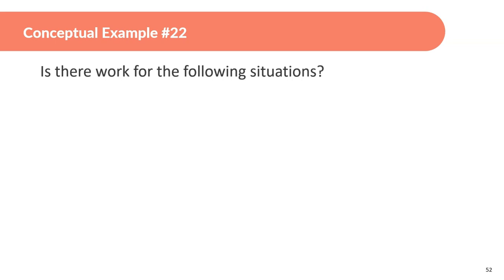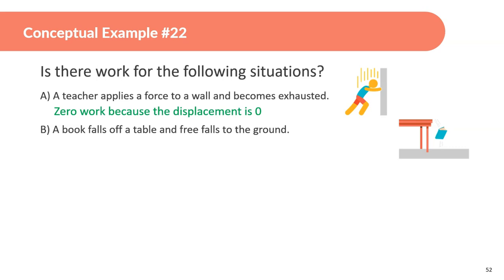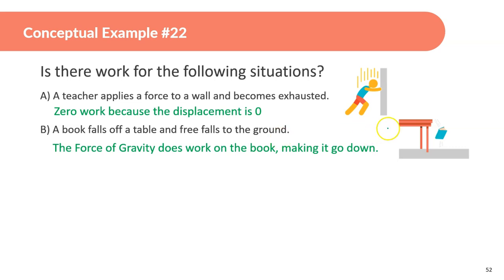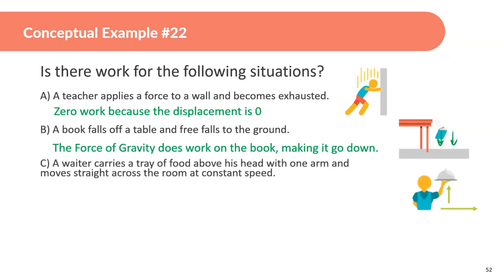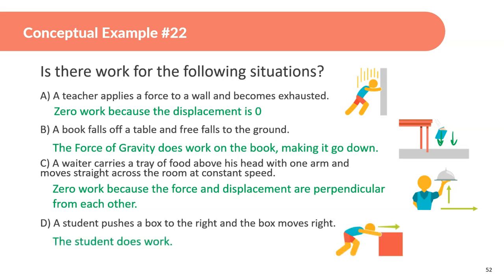Example 22 — is there work done in each situation? A: A teacher applies a force to a wall and becomes exhausted — zero work, because the wall doesn't move. B: A book falls off a table — gravity does work on the book, force of gravity is down and the book moves down. C: A waiter carries a tray above his head moving straight across the room at constant speed — zero work, force and displacement are perpendicular. D: A student pushes a box to the right and it moves right — yes, work is done.